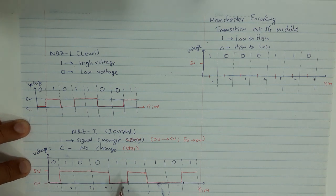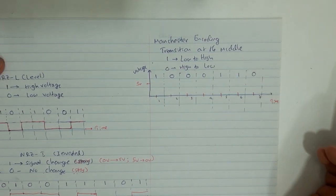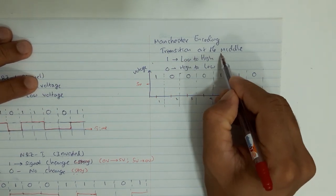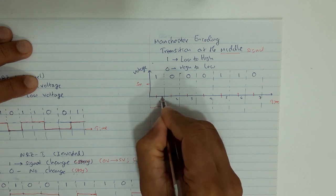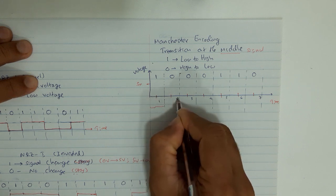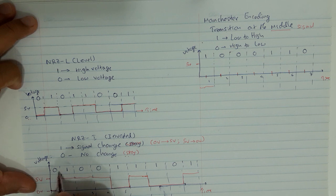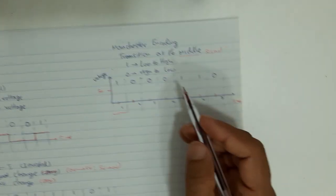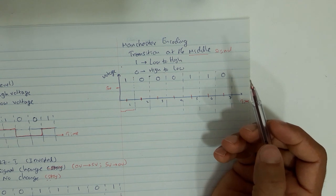Now we go to Manchester encoding — this is a little bit different. The main difference is the signal transition takes place at the middle of the bit period. Earlier in both NRZ-L and NRZ-I, the transition takes place at the beginning of the bit. In Manchester, the transition takes place at the middle. Also, the transition direction is fixed: to represent 1 it should be low-to-high, and to represent 0 it should be high-to-low.